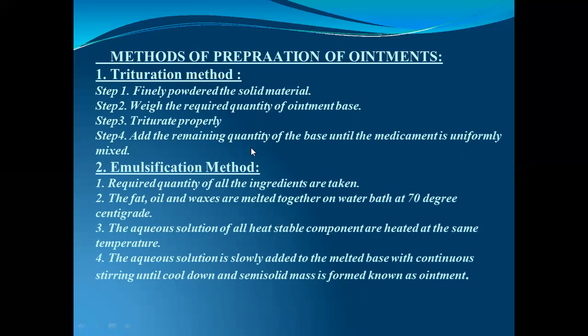Now we will discuss the methods of preparation of ointments. There are three methods. Number one is the trituration method. It consists of the following steps: Step one — finely powder the solid material that you want to incorporate into the ointment. Step two — weigh the required quantity of ointment base. Step three — triturate the powdered product with a portion of the ointment base. Step four — add the remaining quantity of base until the medicament is uniformly mixed to produce a semi-solid preparation.